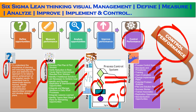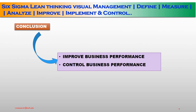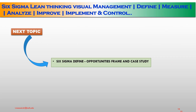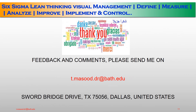In conclusion, today we discussed Improve Business Performance and Control Business Performance — first how to improve and then how to control in order to deliver sustainability. My next topic will be Opportunity Framework and Case Study. Thank you very much for your precious time. Please send me your comments and feedback. Please stay at home, stay safe, inspired and blessed.